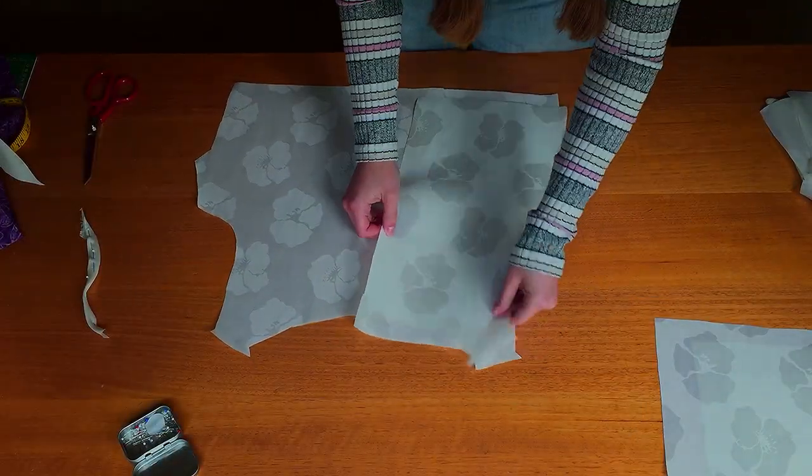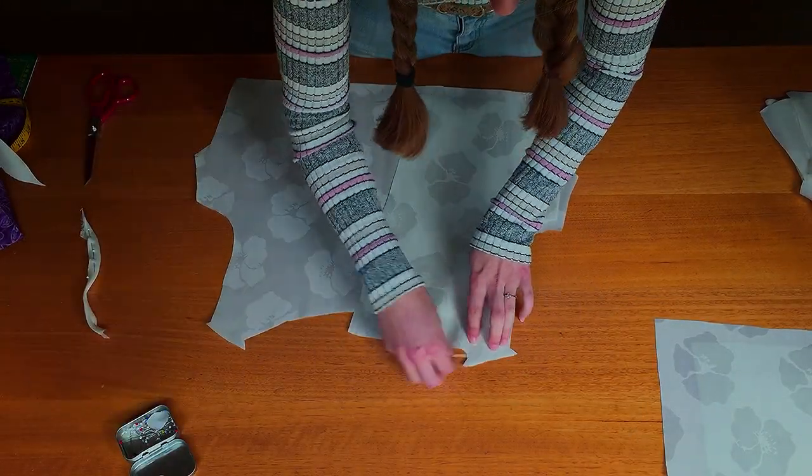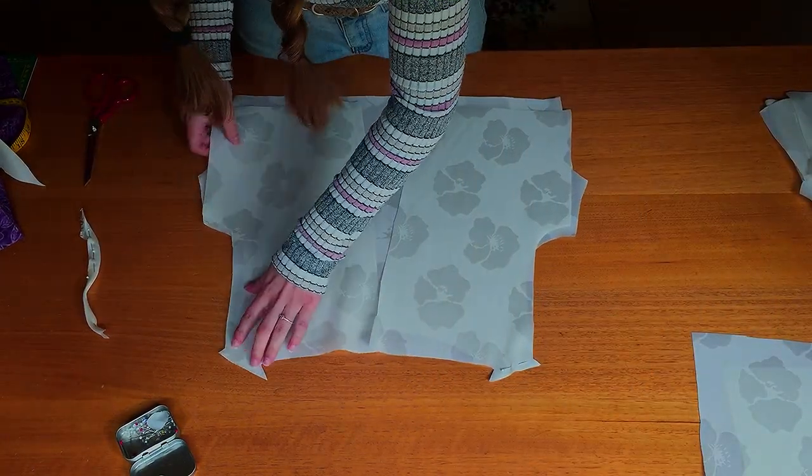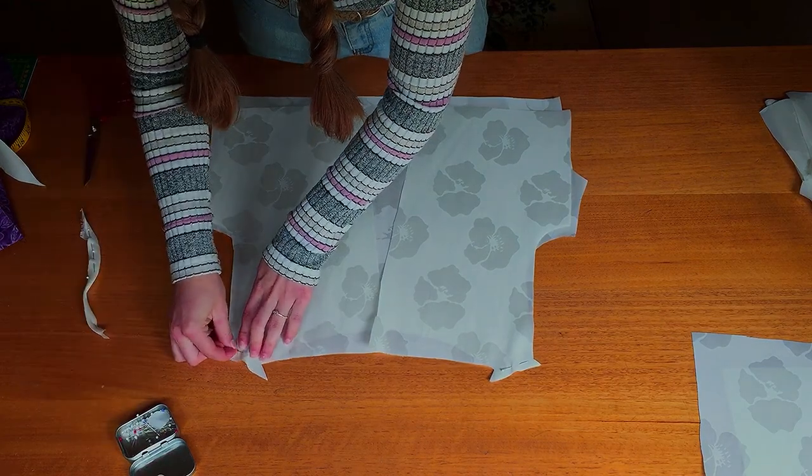Then stitch right sides together through the shoulder seam on both sides. Repeat this for the lining as well, keeping it separate from the main. Then press the seam allowance towards the back.